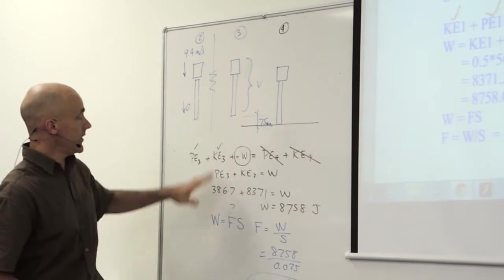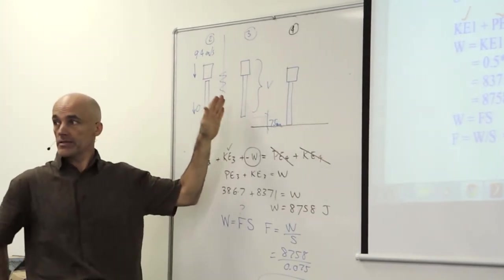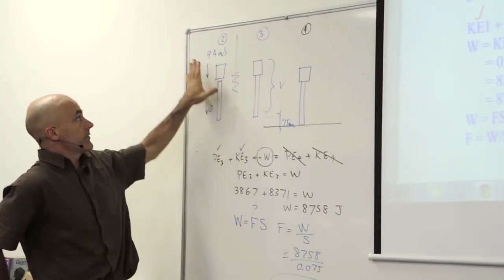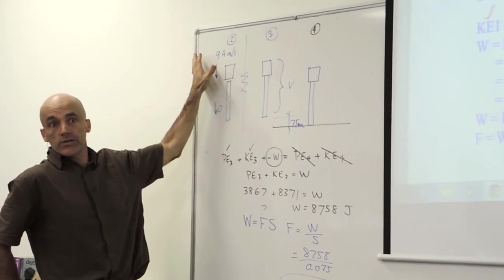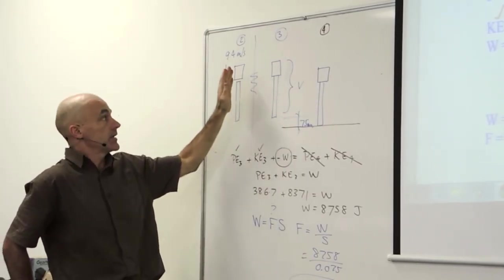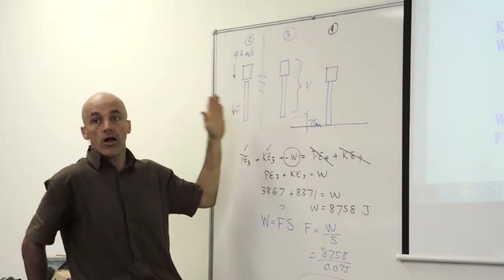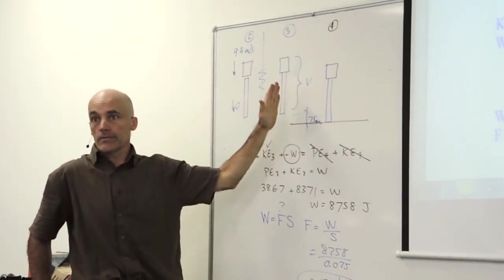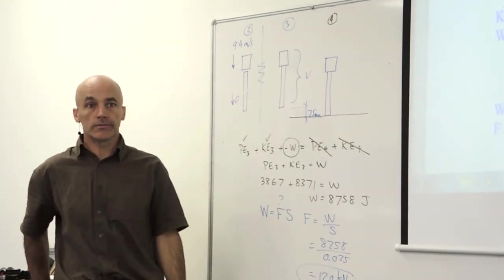So that problem is a nice example of why momentum is required. Beforehand, when we have no collisions, we can use the energy method. We can say potential energy equals kinetic energy. But when there's a collision, we can only use momentum across the collision. After the collision, we can go back to the energy method.